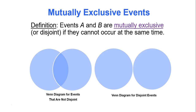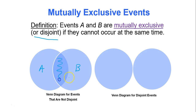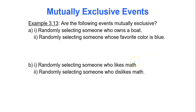We call events A and B mutually exclusive or disjoint if they cannot occur at the same time. If events A and B have overlap — some of their outcomes are the same — then they are not disjoint. If events A and B have no overlap, there are no outcomes that are the same, then they are disjoint. Disjoint and mutually exclusive mean the same thing.